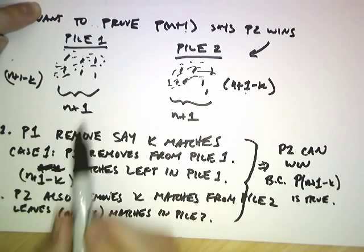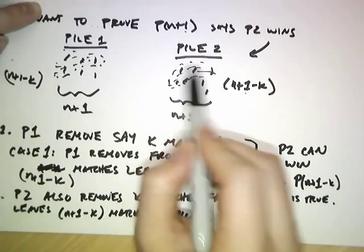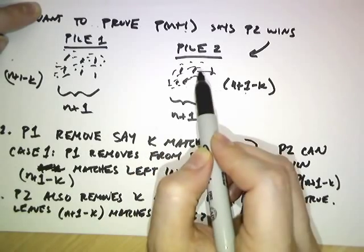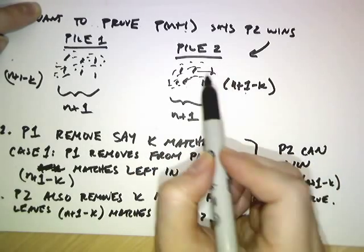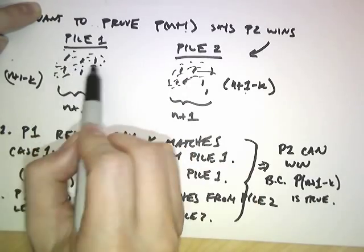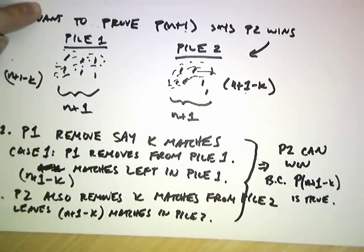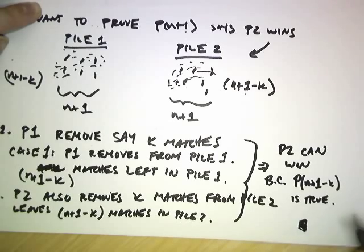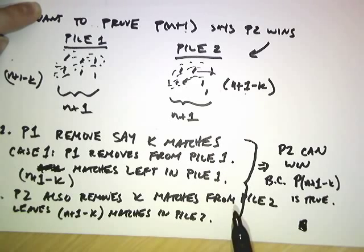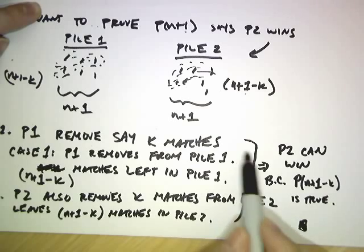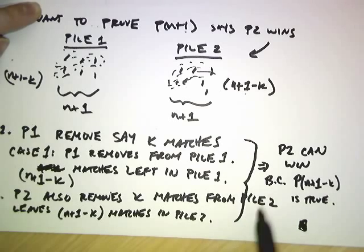We started with n plus 1 matches in each pile. Player 1 removed k, so player 2 mimicked that move, and then we apply the inductive hypothesis to conclude player 2 can still force a win. What if player 1 had removed k matches from pile 2? Same case — player 2 removes k matches from pile 1 and we apply the same inductive hypothesis. This completes the inductive step and the proof.